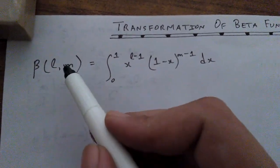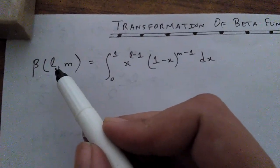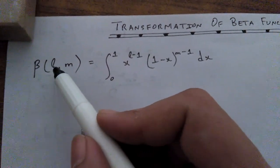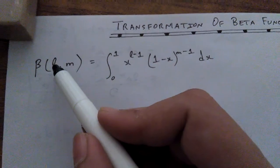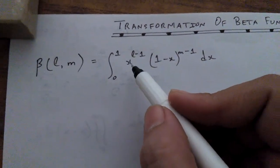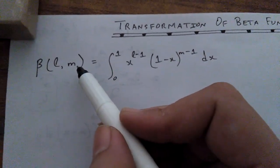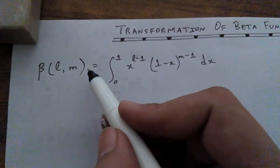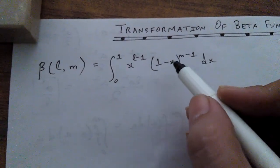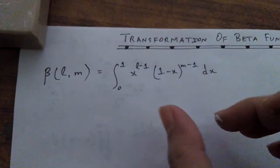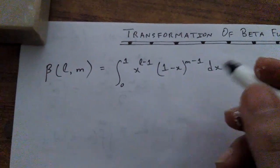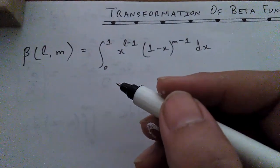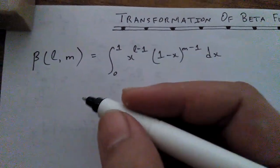Remember that the first positive real value in the beta function, when you subtract one from it, behaves as a power on the base x. When you subtract one from the second real value, that behaves as an exponent on the base (1 − x). Keep this in mind. Now we are going to apply a major substitution in the integration.